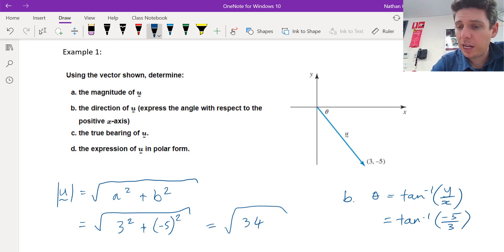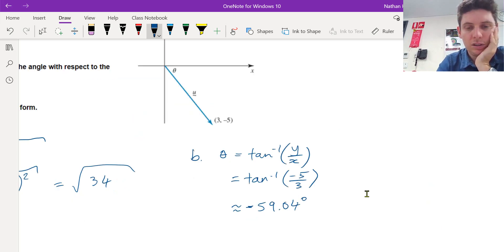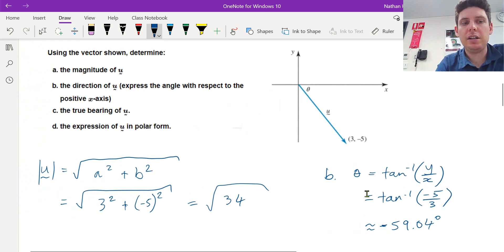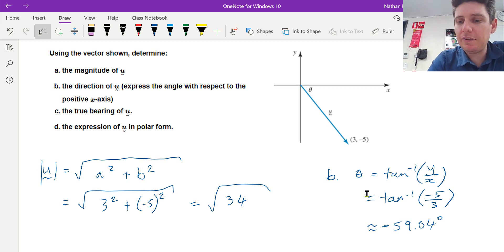If this were an exam, you could use your calculator. If it was tech free, you would use your special triangles or standard triangles. In the calculator, we get negative 59.04, which makes sense. It's going in the clockwise direction, which makes it a negative answer.